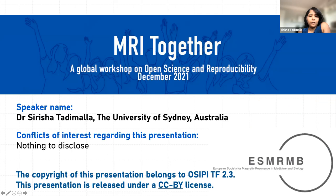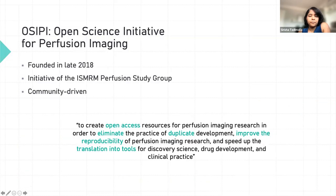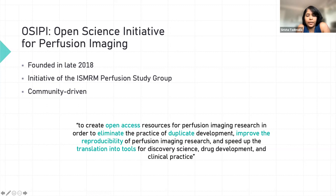I have no conflicts of interest regarding this presentation. OCP is the open source initiative for perfusion imaging. This initiative came about in late 2018 from the ISMRM perfusion study group. At the time, a survey was carried out to identify what group members thought was lacking in the current perfusion imaging field, and overwhelmingly the response indicated that we need to improve the reproducibility of perfusion imaging parameters.